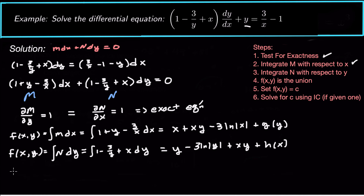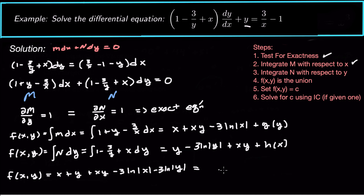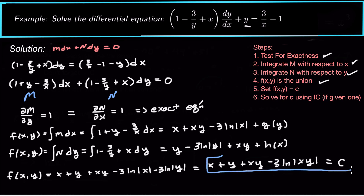We've got our two expressions, so now we take the union of these two. f(x, y) is the union, which gives us x plus y plus xy minus 3 natural log of absolute value of x minus 3 natural log of absolute value of y. We can reduce that using a log property to x plus y plus xy minus 3 natural log of absolute value of xy. Since we don't have an initial condition, we set it equal to a constant c. That is the implicit solution to this exact differential equation.